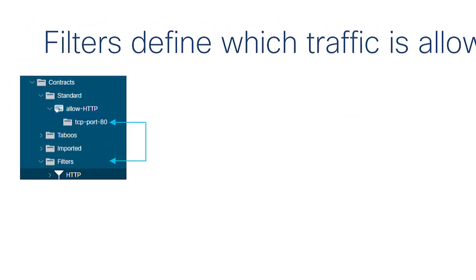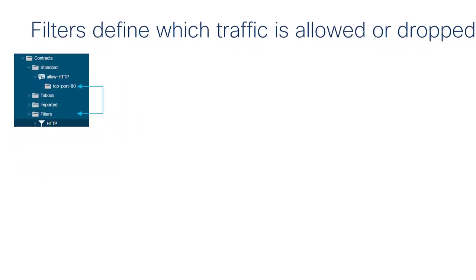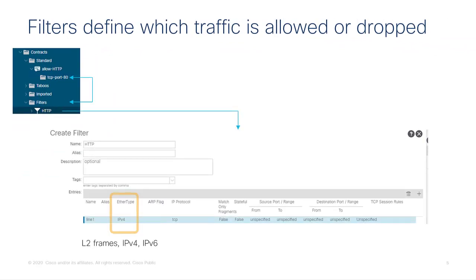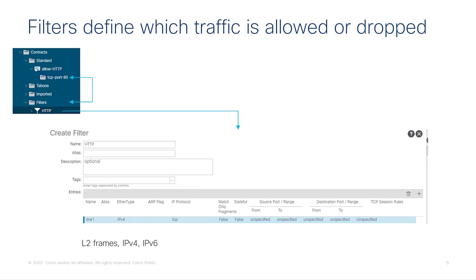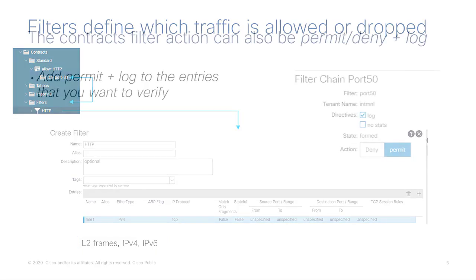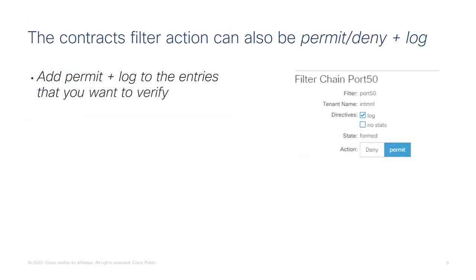What defines which traffic is allowed are the filters. Here you see an example from the UI: there is a contract called allowHttp using a filter called protocol.http. In the filter you can see the administrator defined the ether type, the layer 4 protocol, and the source and destination layer 4 port ranges. There are more options such as matching on TCP flags. The contract filter actions are permit, deny, or redirect, and you can also combine permit or deny with log.